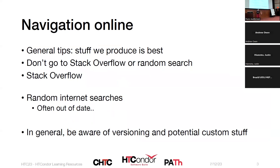In general, the stuff we produce is the best, because it's likely to be more up to date. Stack Overflow and random searches sometimes have useful tips, but are more likely to be out of date or potentially a kludge that's not the best way to do something. In general, be aware of versioning when you're looking for information and potential customization.